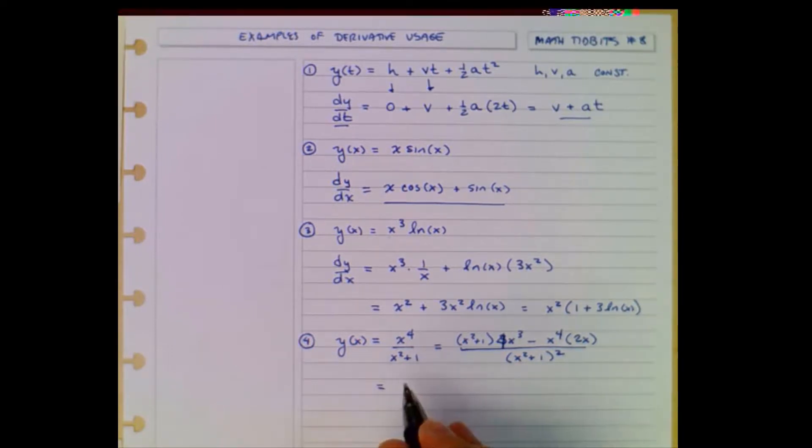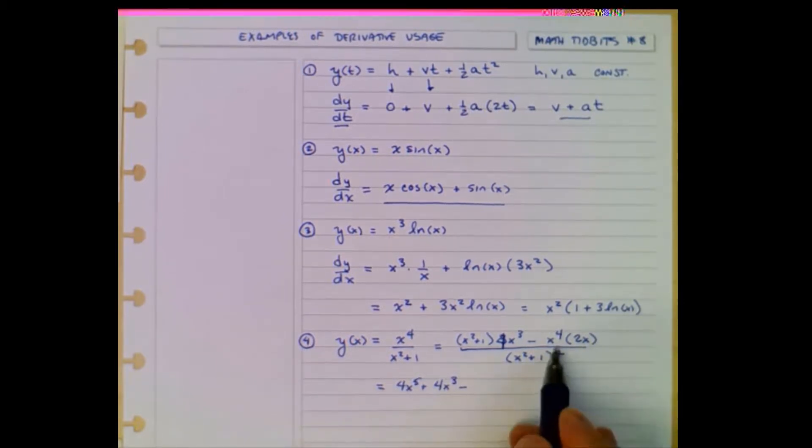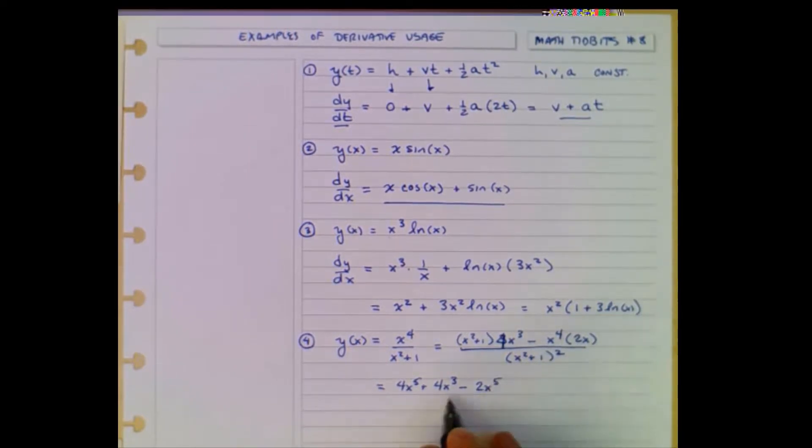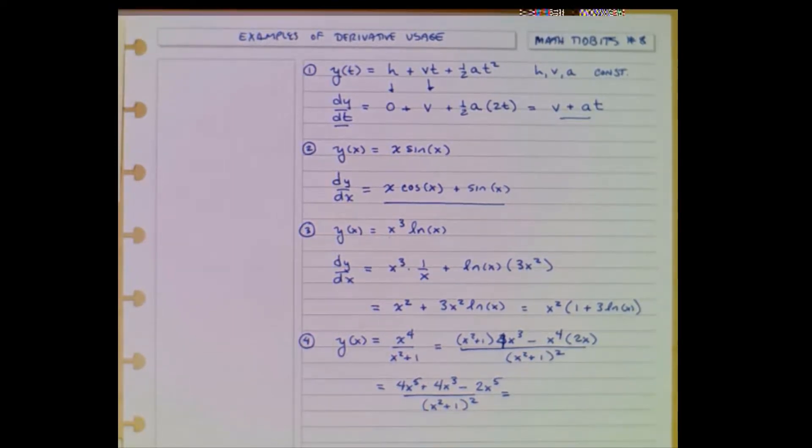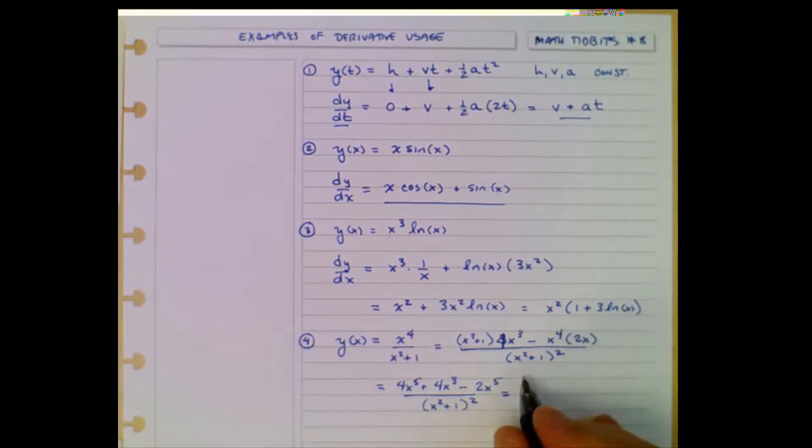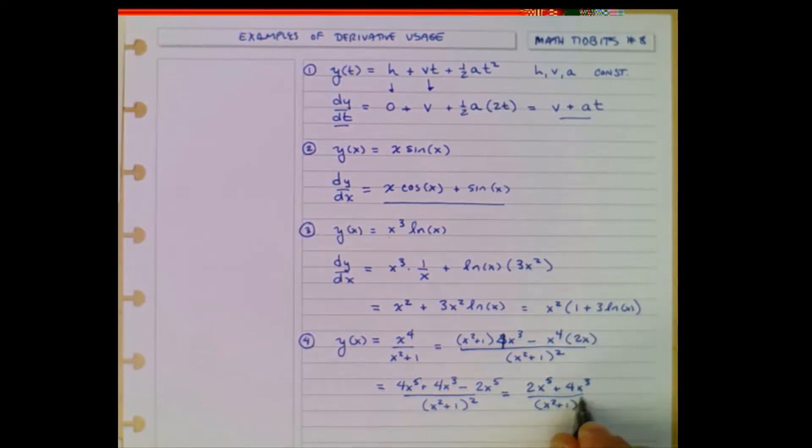So we could simplify matters just a little bit. This would be 4x to the fifth plus 4x cubed minus 2x to the fifth over x squared plus 1 squared. Slight improvement can be had if we combine the x to the fifth term. So then it's 2 times x to the fifth plus 4 times x cubed over x squared plus 1 squared.